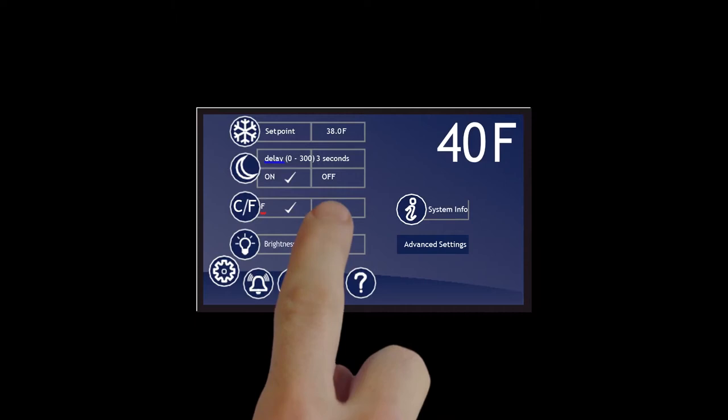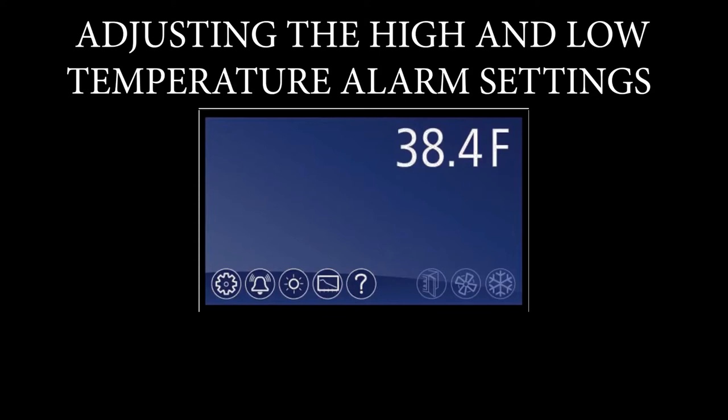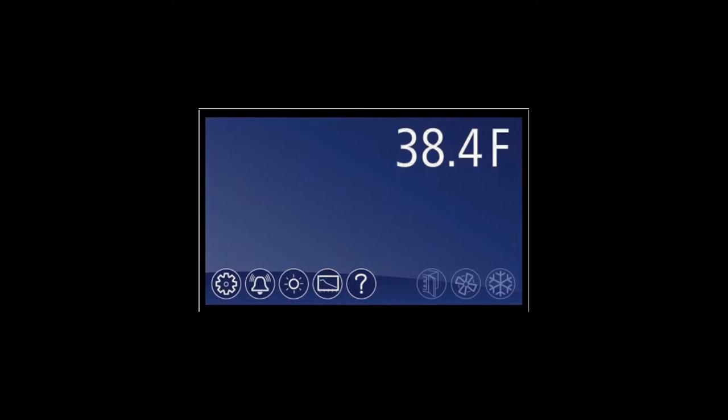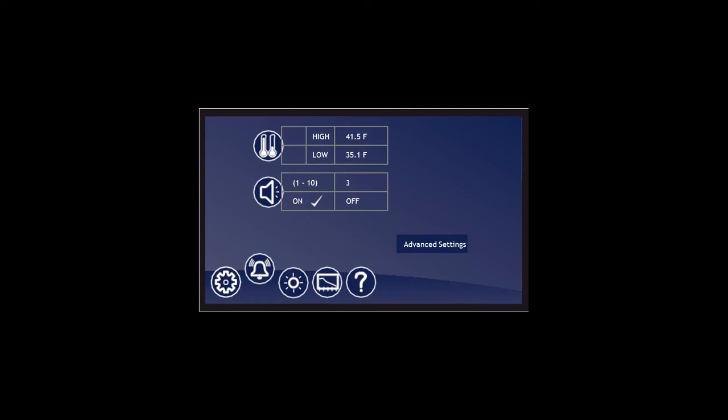Adjusting the high and low temperature alarm settings. This will only be required if desired by the end user. To change the temperature alarm settings, press the alarm icon which is located to the right of the Settings icon. To adjust the alarm values, simply touch the value in the box next to the label and either select the desired value on the keypad or use the arrows to scroll up or down to the desired value. To confirm the new value, press the check mark.